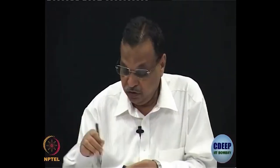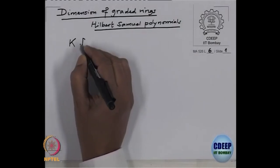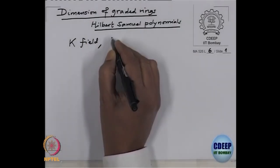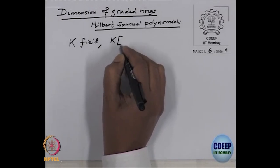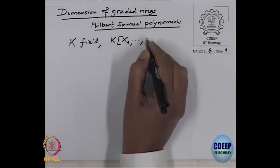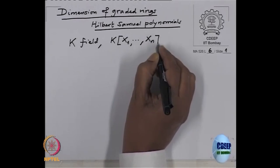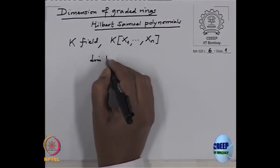Today I will develop a theory of Hilbert-Samuel polynomials and study the dimension of graded rings in general. To motivate this, remember that when K is a field and we have the polynomial algebra over K in n variables, we have seen the dimension of this ring is n.